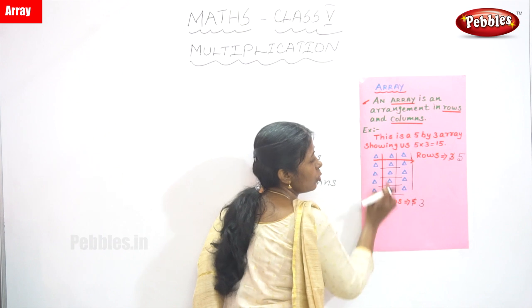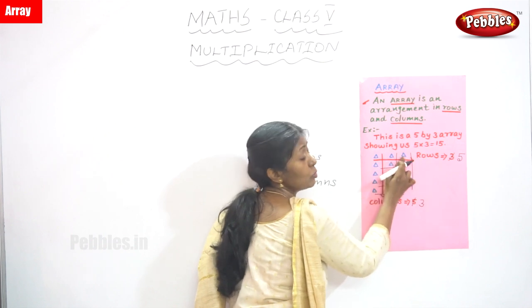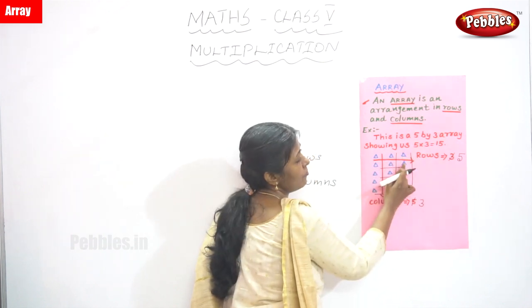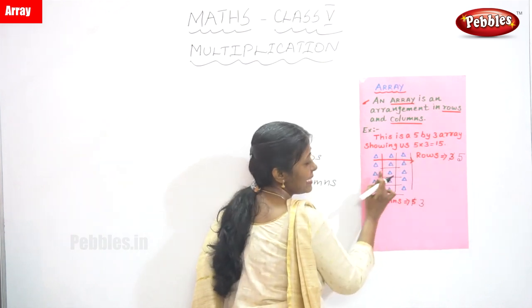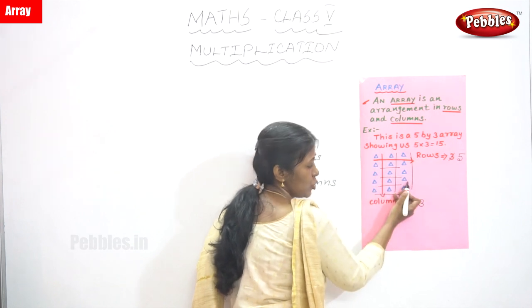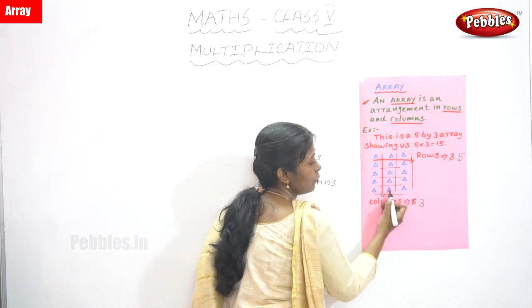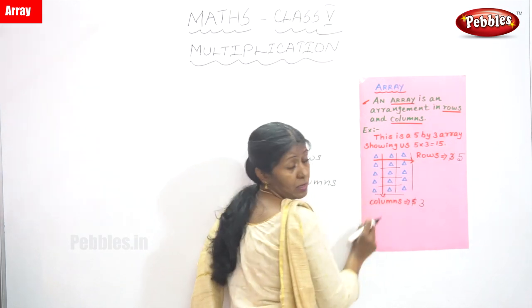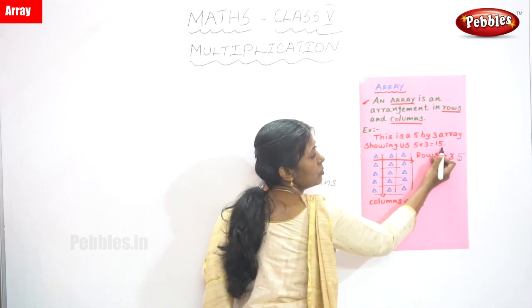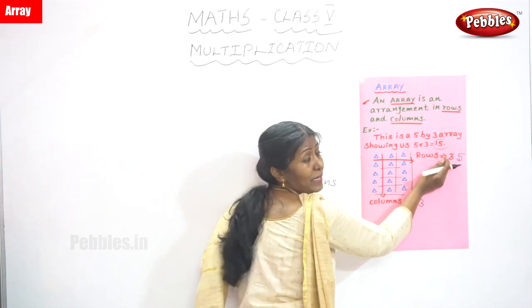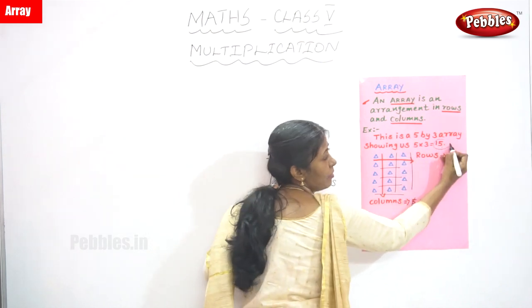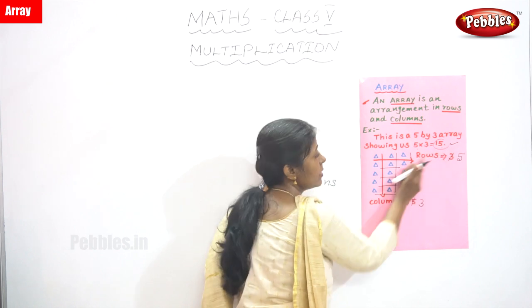So how many triangles? 1, 2, 3, 4, 5, 6, 7, 8, 9, 10, 11, 12, 13, 14, 15. So 5 x 3 — the multiplication is correct. 5 x 3 is 15.